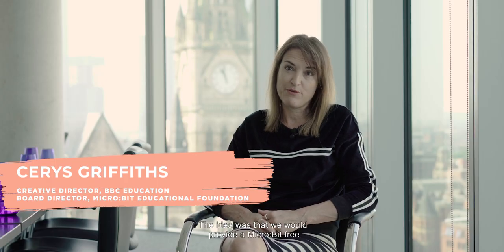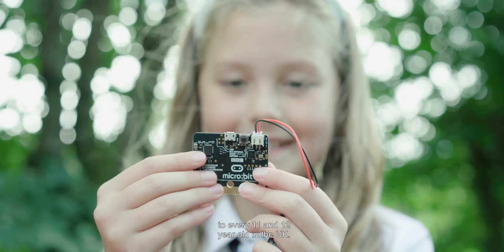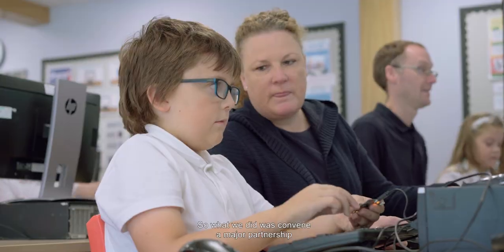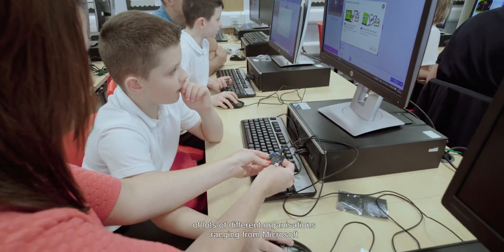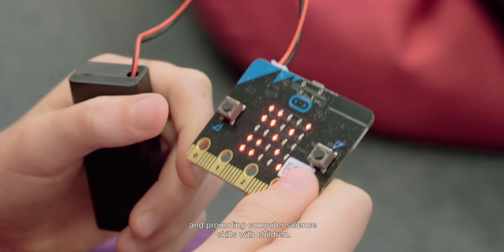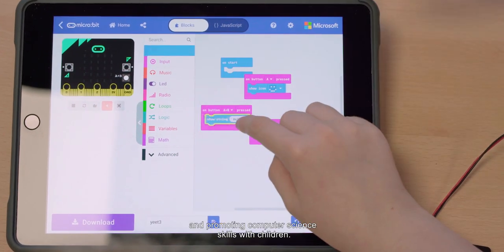The idea was that we would provide a micro:bit free to every 11 and 12 year old in the UK. So what we did was convene a major partnership of lots of different organizations, ranging from Microsoft to Samsung, people that were very interested in coding and promoting computer science skills with children.